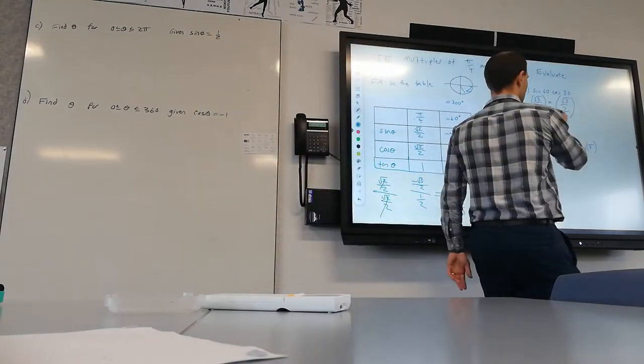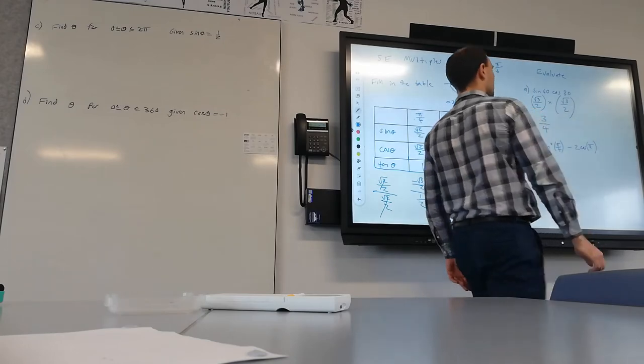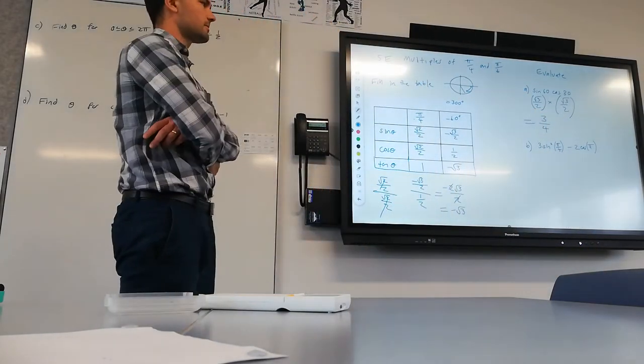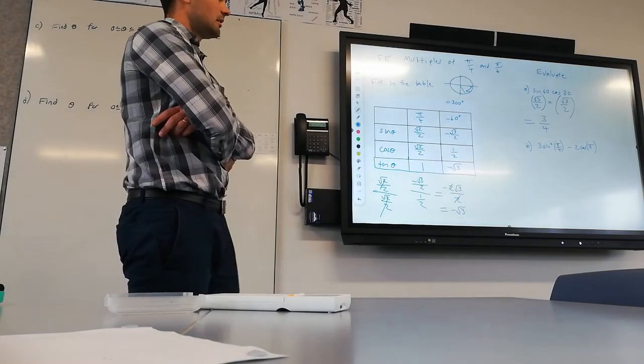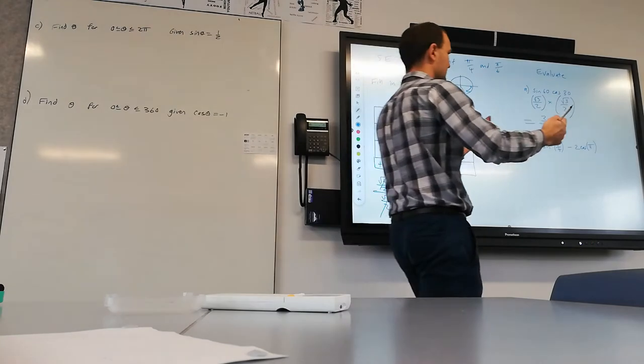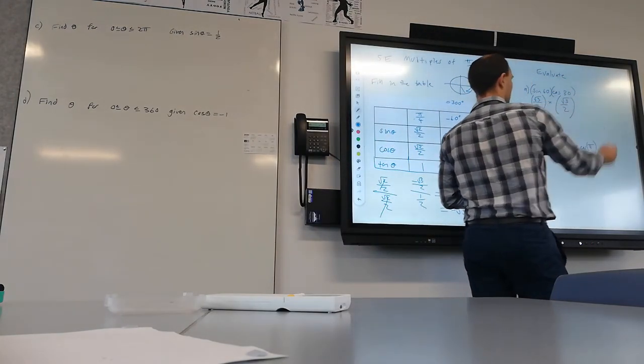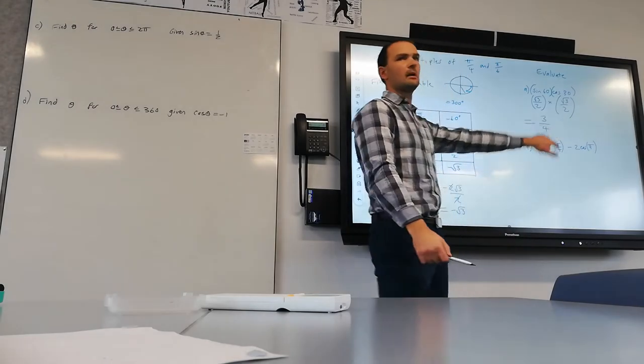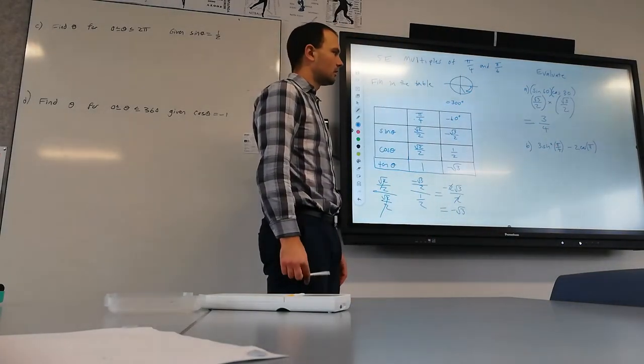That's what it's equal to. And then we're going to evaluate that. Root 3 times root 3, that's going to be 3. And 2 times 2, that's 4. When we're multiplying fractions, it's just top times top and bottom times bottom. And of course, if you have your calculator in degrees and you put this in your calculator, sine of 60 times cos 30, it's going to give you the same answer that we've generated here.